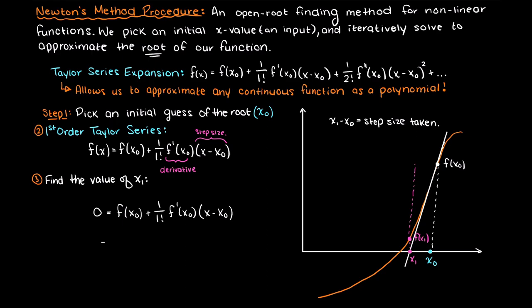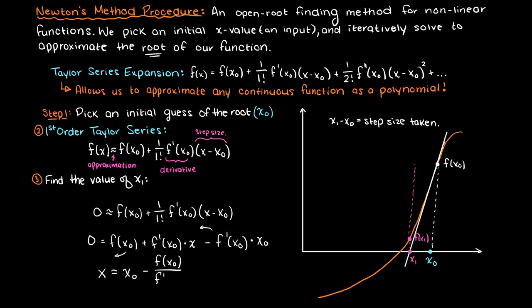Then expanding our derivative and the step terms we can isolate our function for the input that gives us an output of 0. So doing so results in the equation which is the base of Newton's method. So if you've seen this equation before and didn't know where it came from, well now you know.